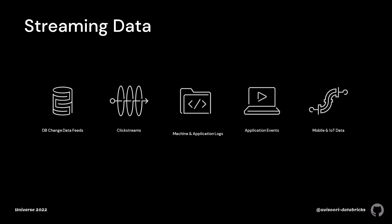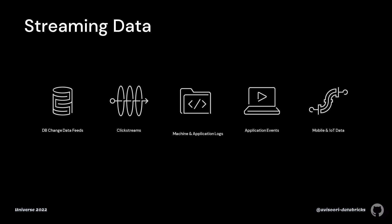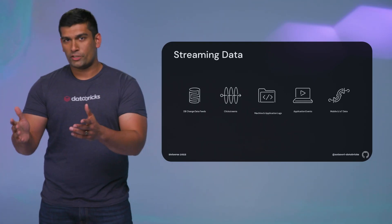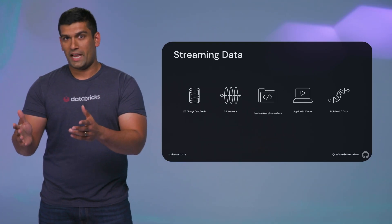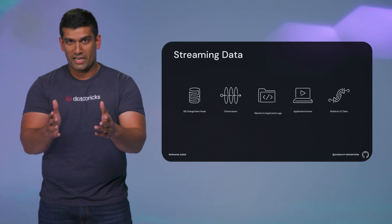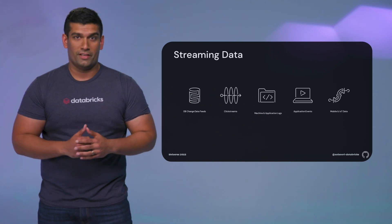To come up with a solution, we need to take a look at a couple of things. First, streaming. The definition of streaming data is data that is continuous and unbounded. There are a large number of streaming data sources: change data feeds from databases, clickstream data from websites like the one we're talking about, machine and application logs, application events, and mobile and IoT data.